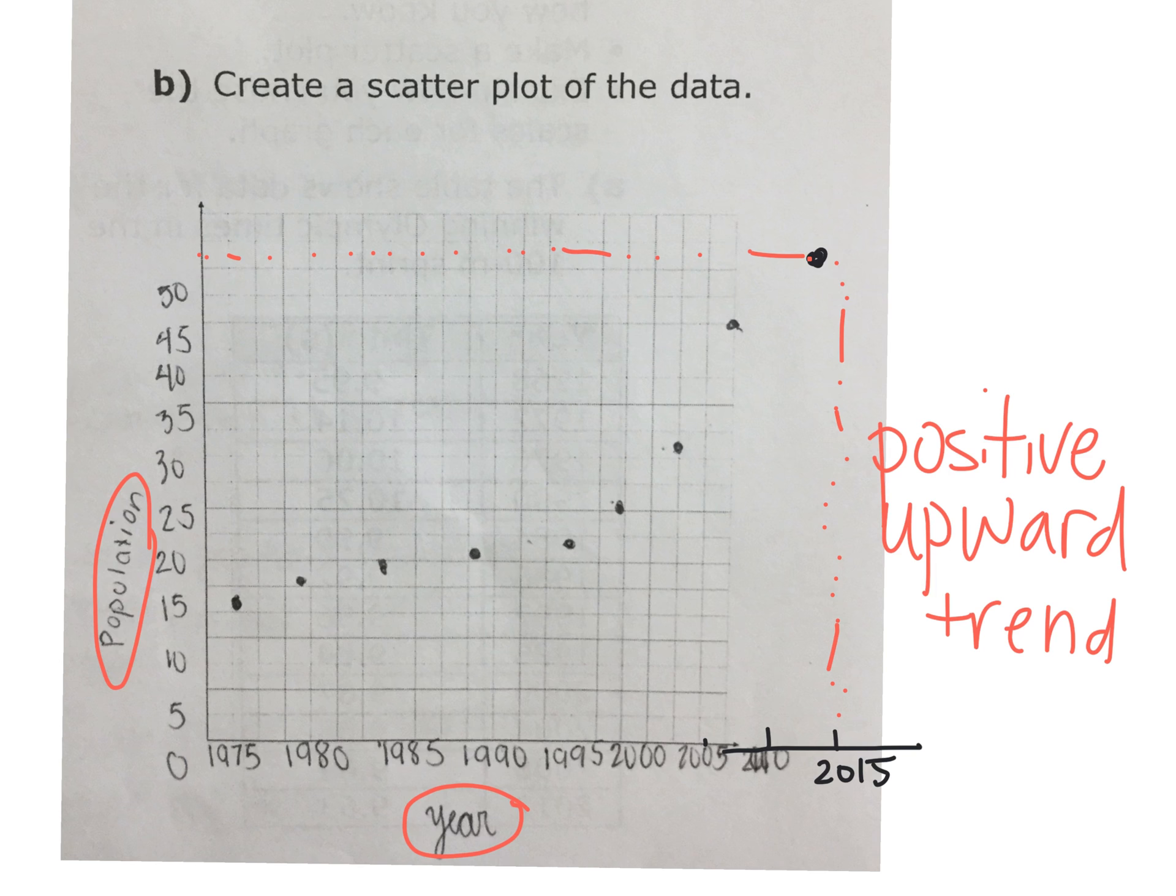So that means that what would the prediction be? I mean, sorry, what would the population be in 2000 and, well, because we don't have that data. In 2015, what do you think the population was? Around 55,000, because it's a population in thousands. Around 55,000 people.